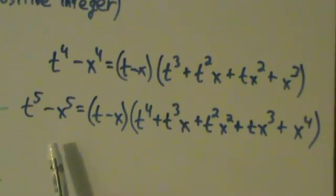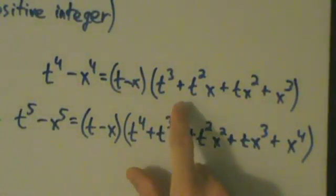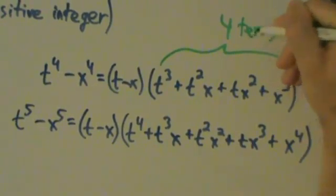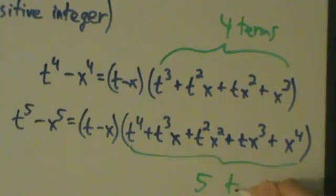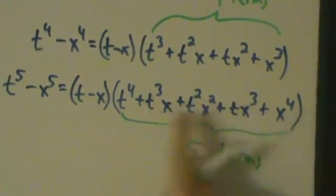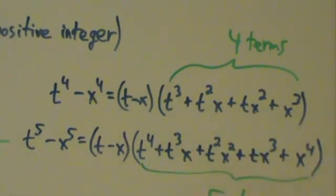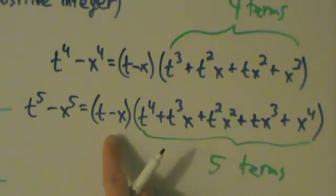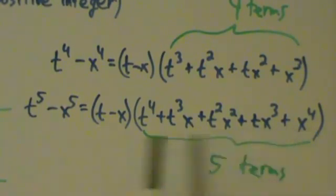If we try t to the sixth minus x to the sixth, we'd have t to the fifth plus t to the fourth x plus t cubed x squared, and so on. Now let's also look at the number of terms. For t to the fourth minus x to the fourth, we have four terms inside the parentheses. For t to the fifth minus x to the fifth, we have five terms. So the number of terms inside the parentheses equals the exponent, and this pattern always holds — you pull out t minus x, then powers of t decrease while powers of x increase, with the same number of terms as the exponent.